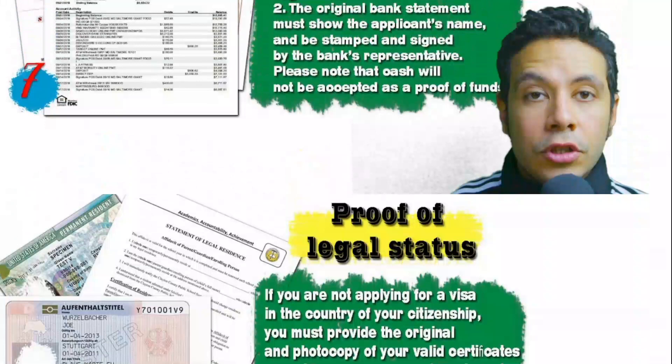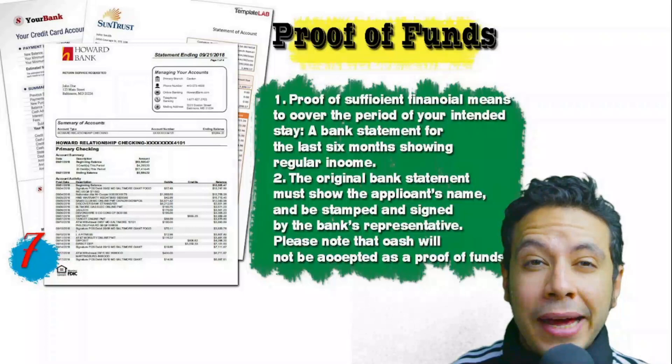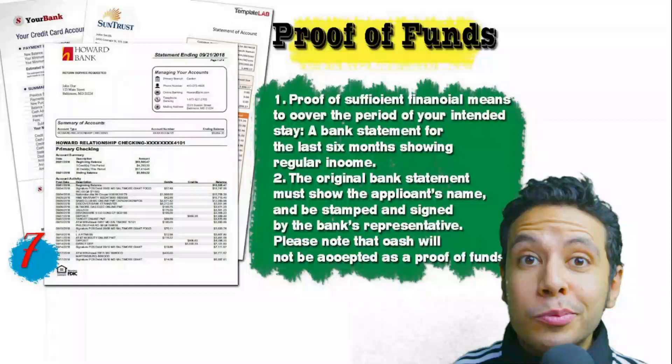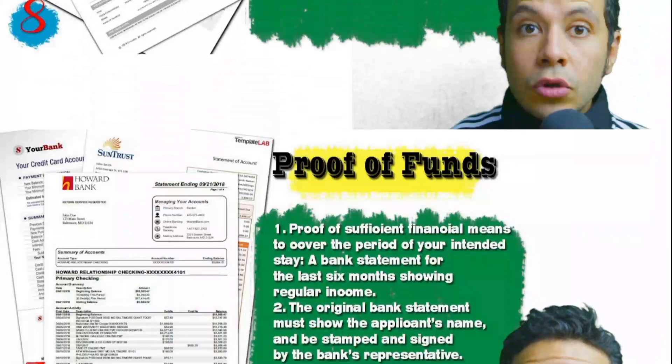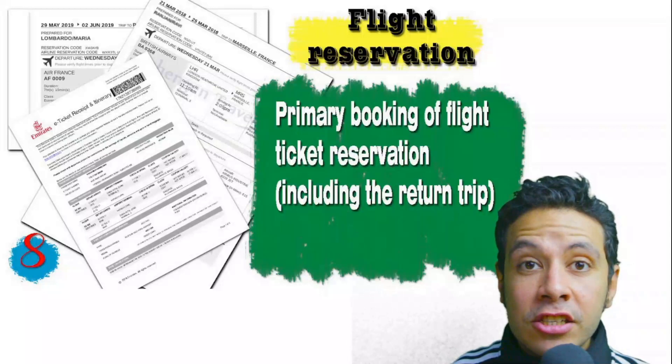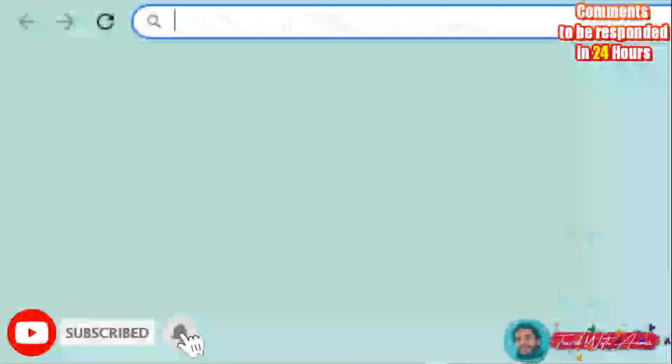You will need to provide a proof of sufficient funds: a bank statement showing your balance for at least six months, with your name, signed and stamped by the bank. Cash is not accepted as proof of funds. You should also provide a flight reservation — an initial booking is usually sufficient, but in some cases a confirmed booking with a return ticket is required.